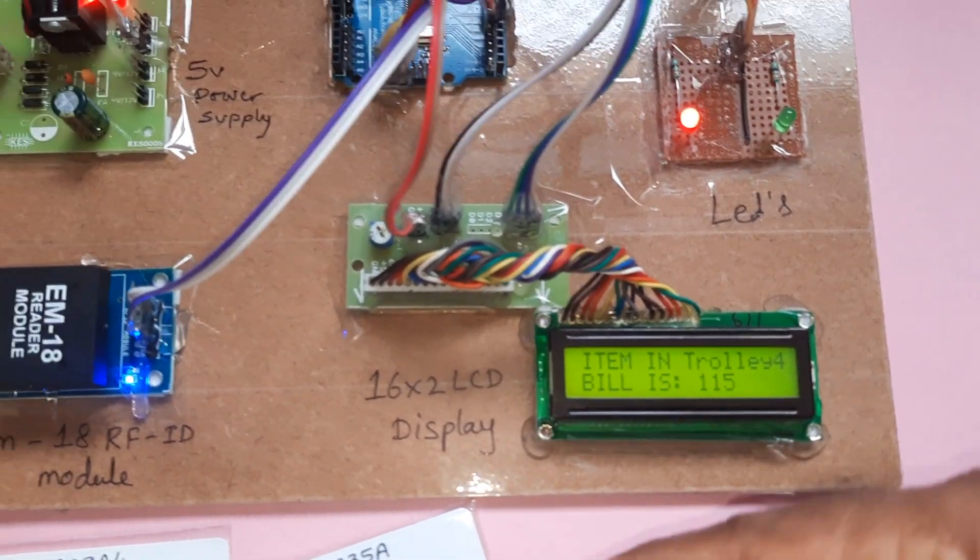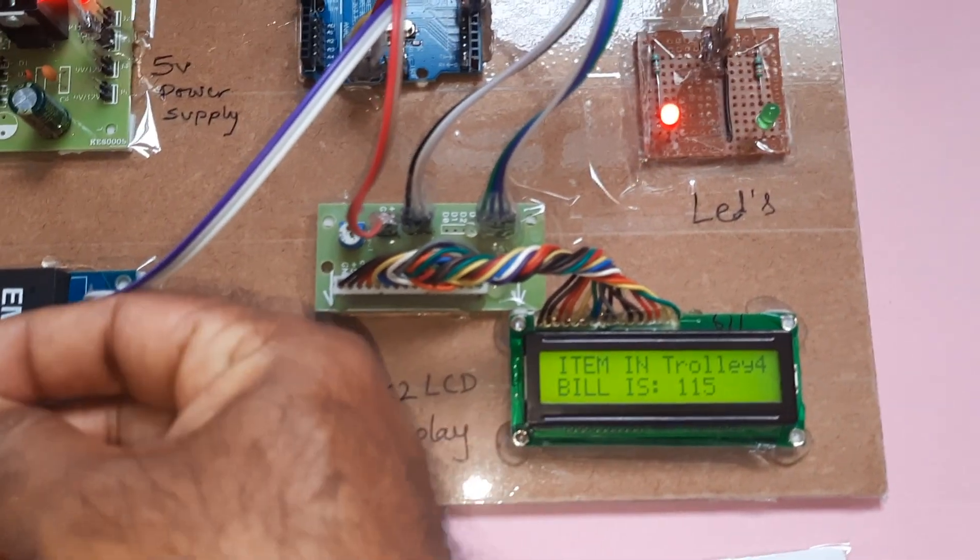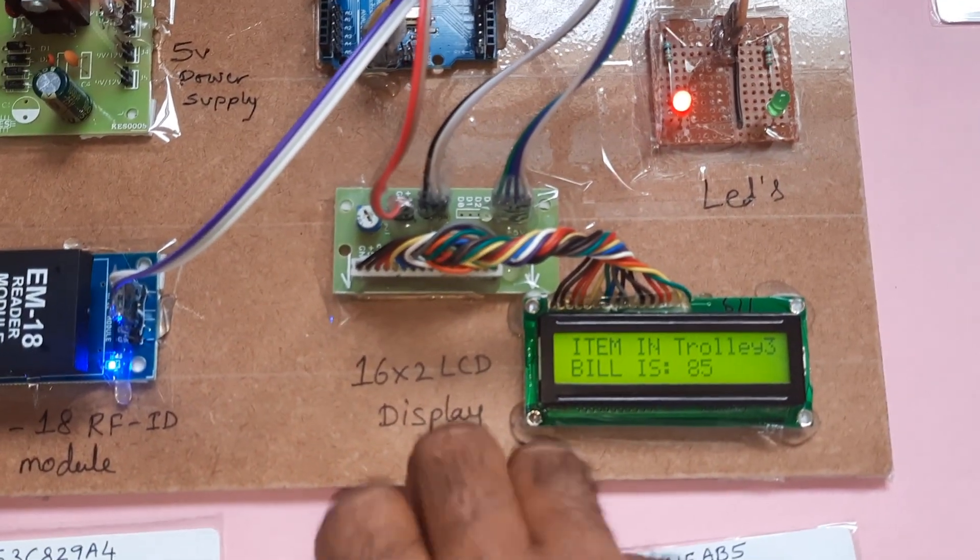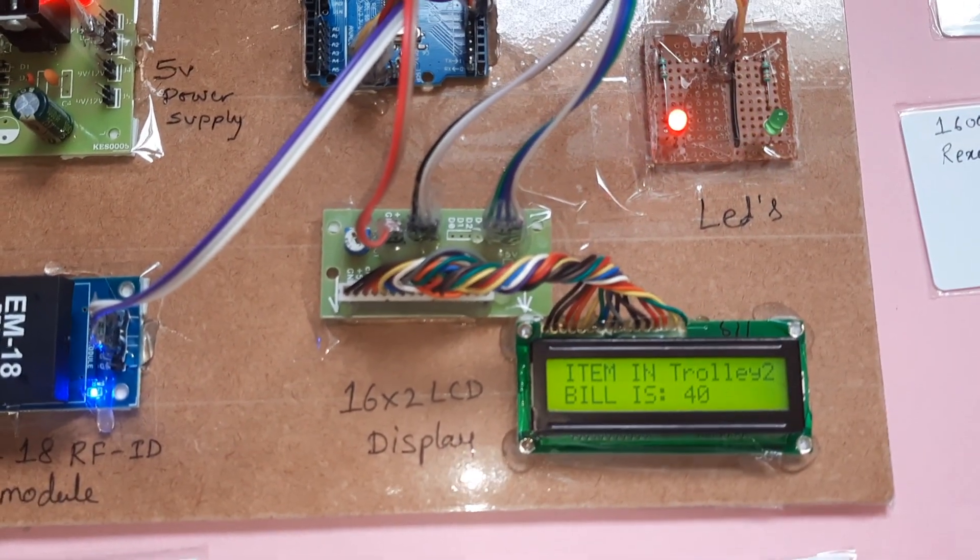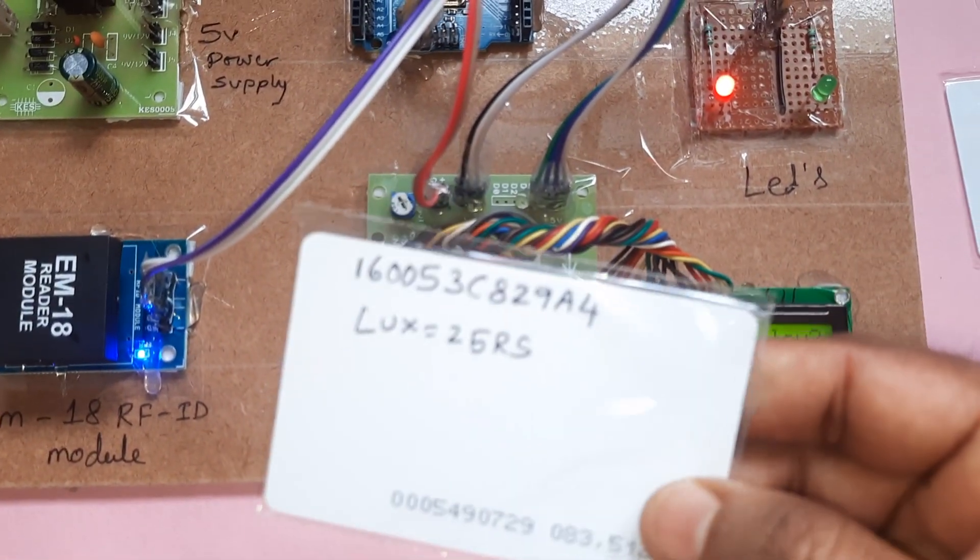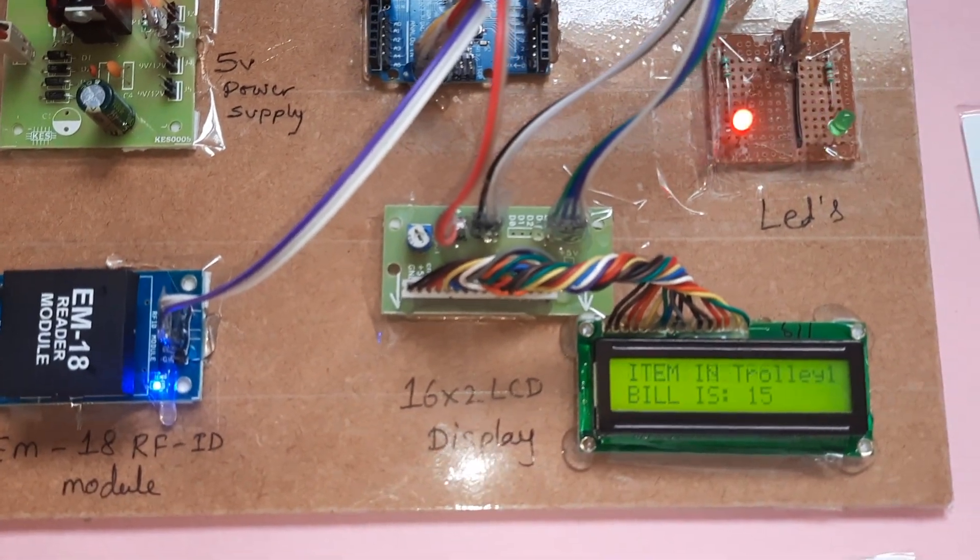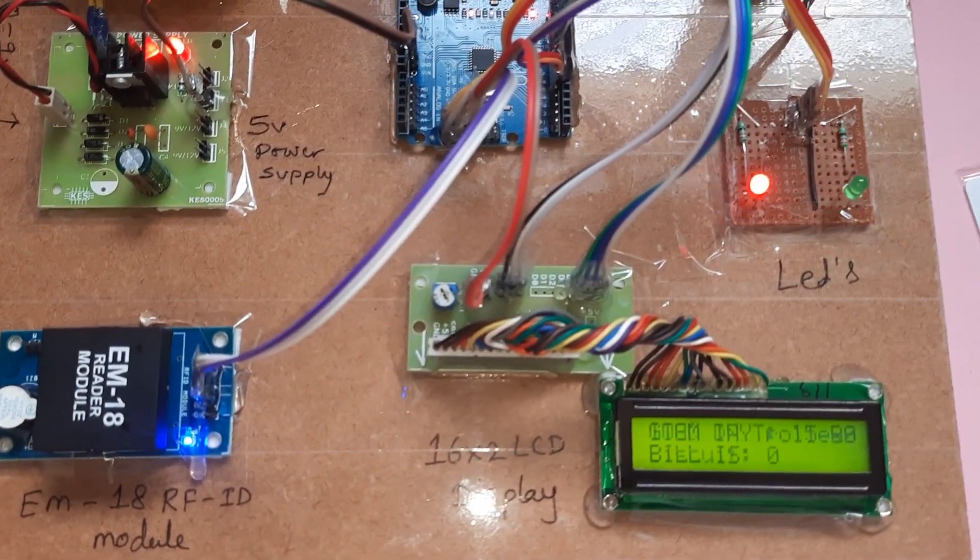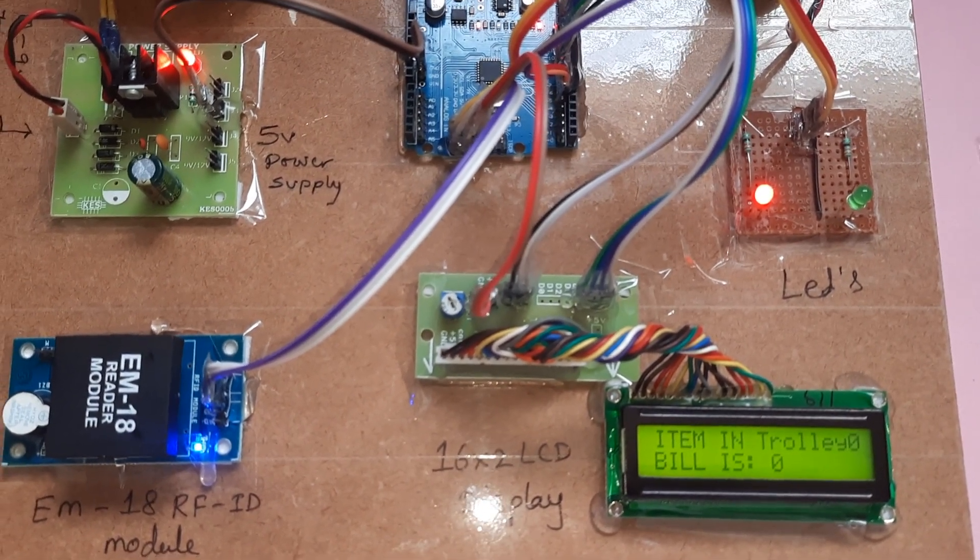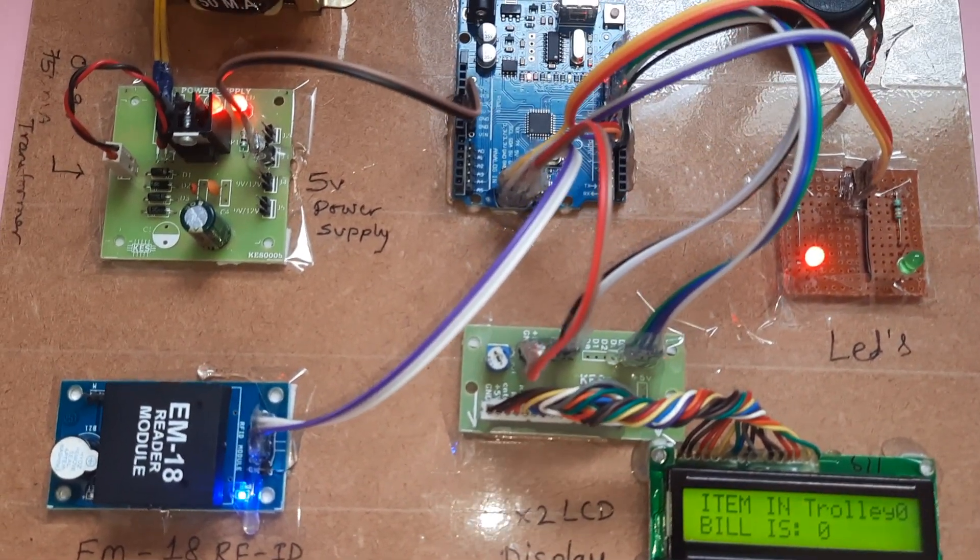Now I'm removing the items. Dairy Milk removed, Lux soap removed. Items in trolley is zero, bill is also zero.